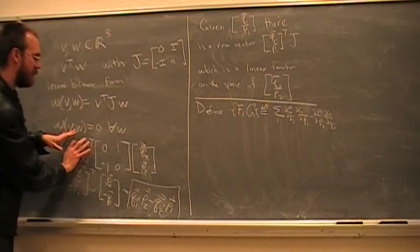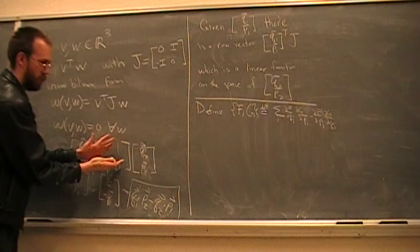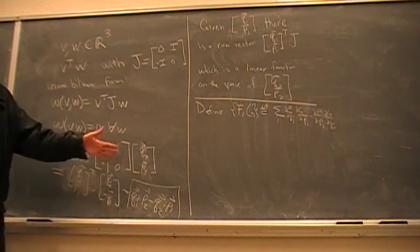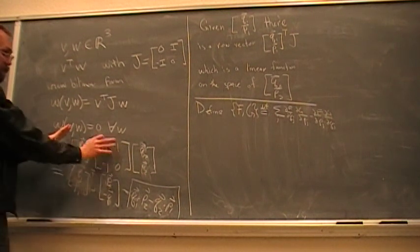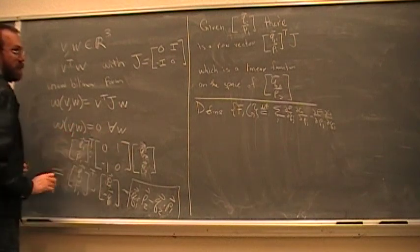This whole thing is natural to do this multiplication first. That's what I did to show the algebra. But if you do this multiplication first, then you get a nice row vector.